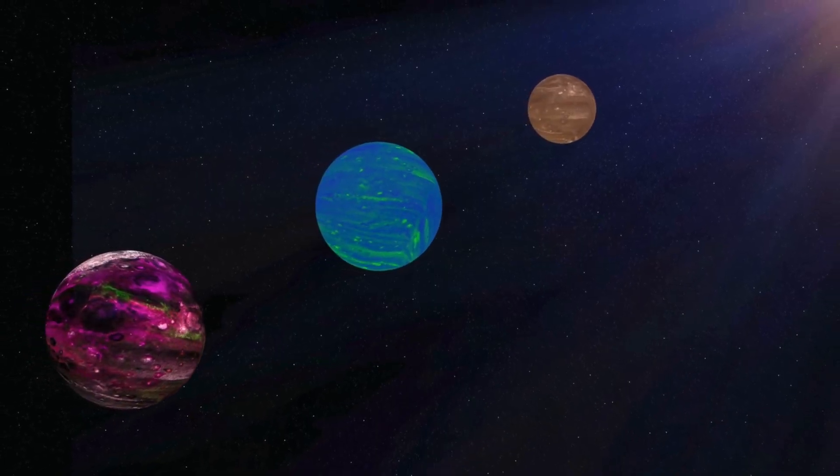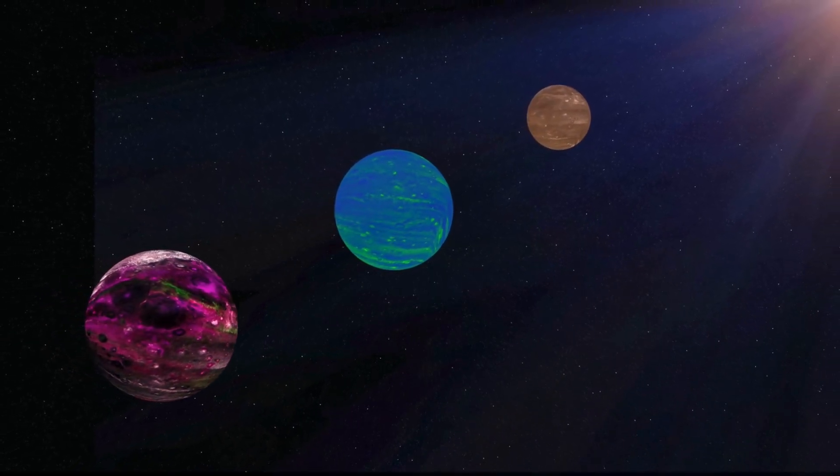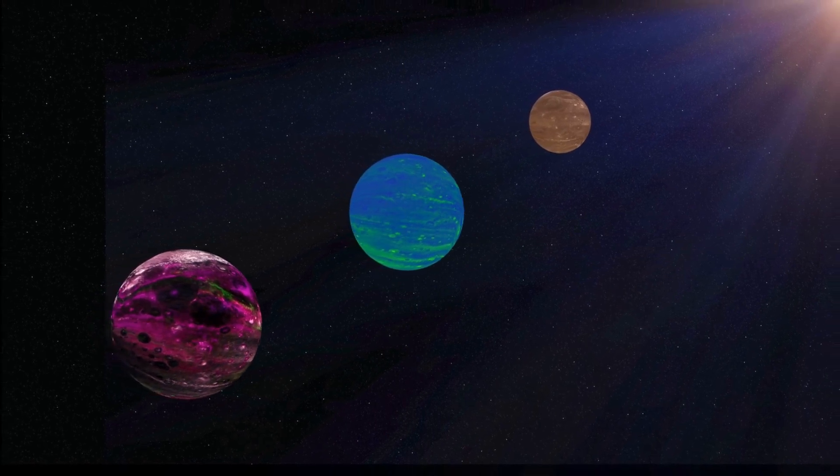The largest known objects in the Kuiper Belt are the dwarf planets Pluto, Eris, Haumea, and Makemake.